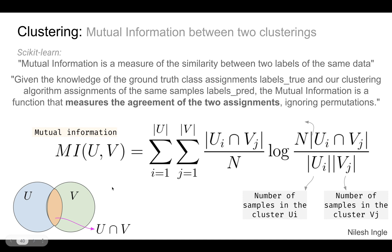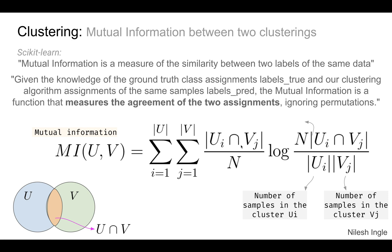Moving on from classification metrics like the confusion matrix to clustering, the very first metric is mutual information between two clusterings. As seen in the figure on the bottom left, we have two different labels u and v. The intersection u ∩ v is shown, and then we have the logarithm of that term — this is used to calculate the mutual information.